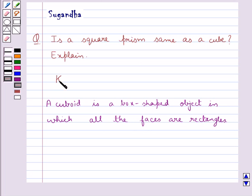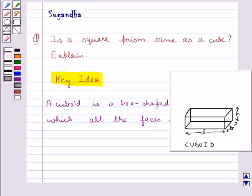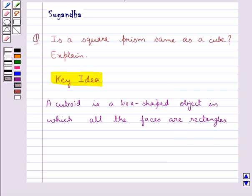This is the key idea to be used for this question. The figure given here is a cuboid with length L, breadth B, and height H. As you can see, all the faces of the cuboid are rectangular in shape. Now let's move on to the solution.